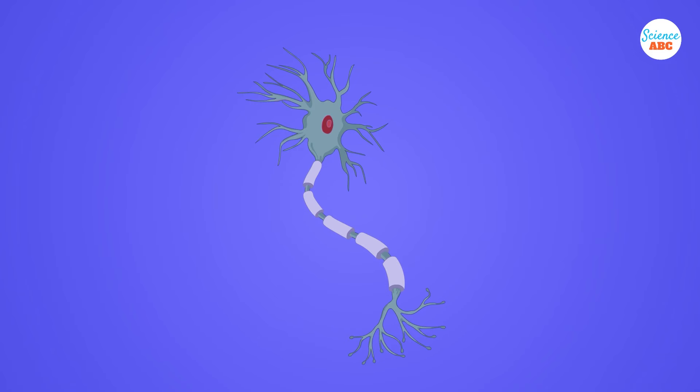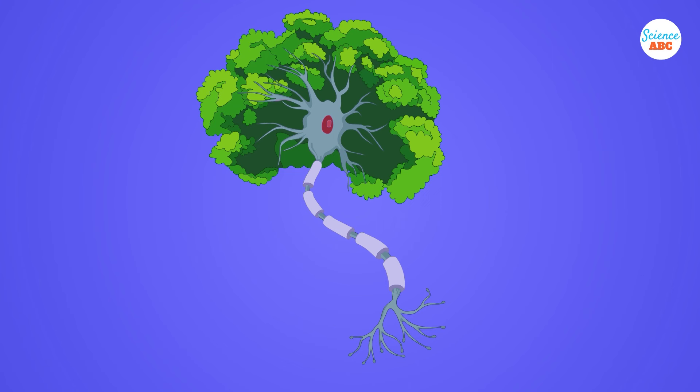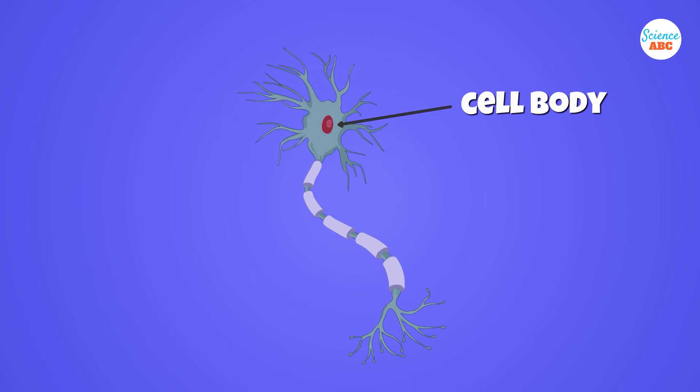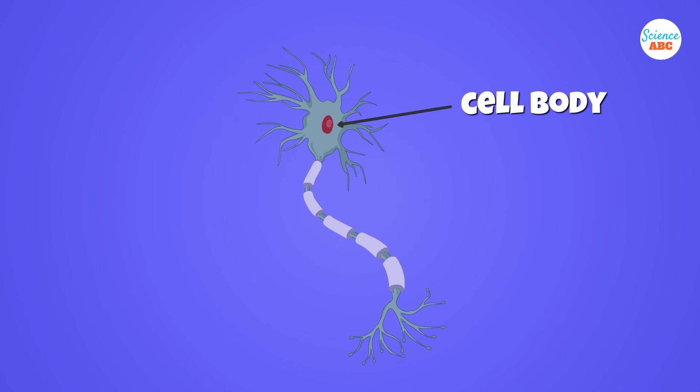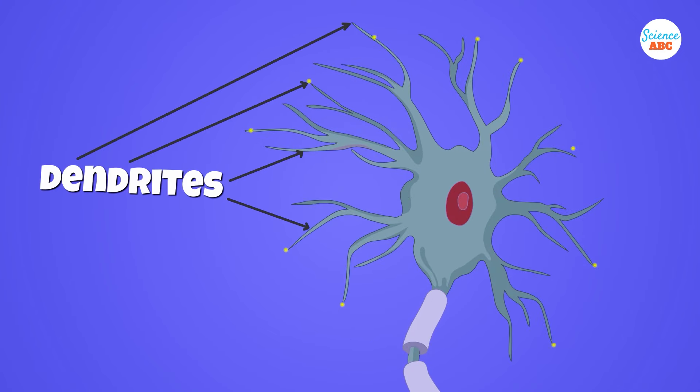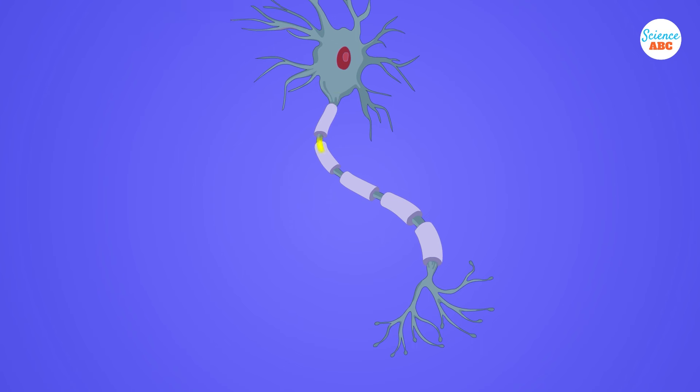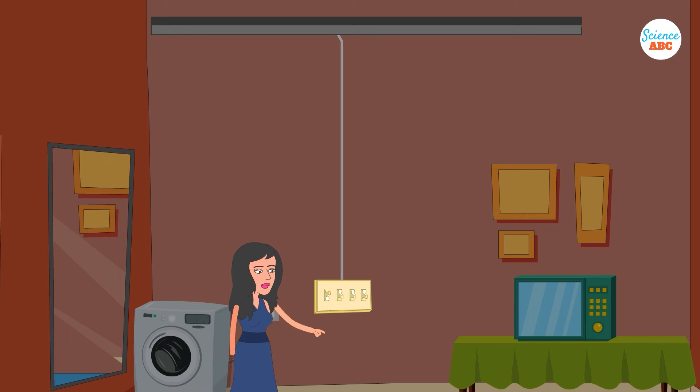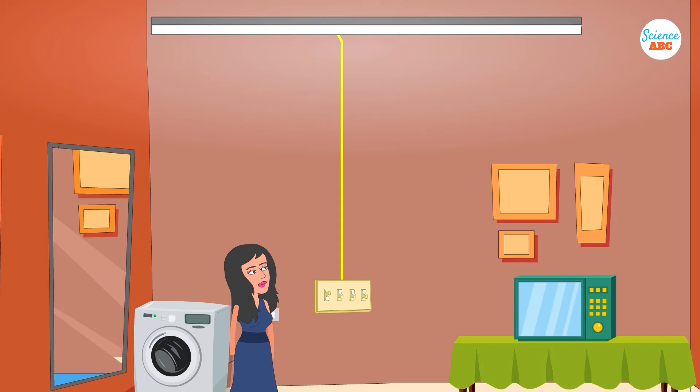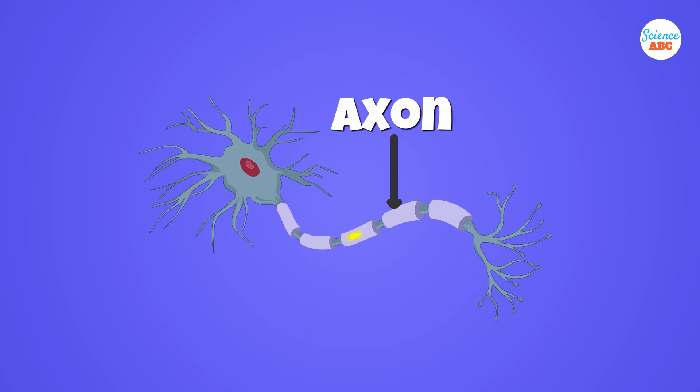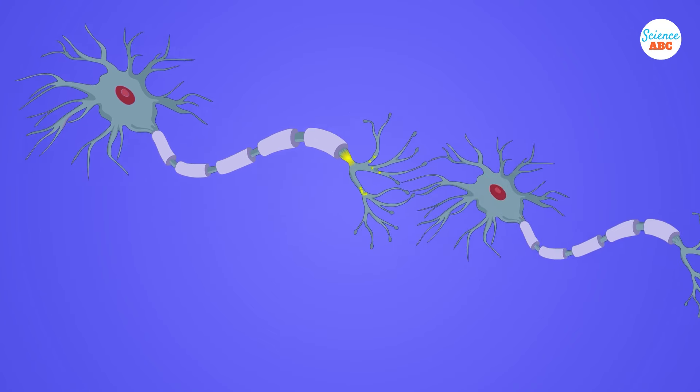But briefly, the neurons look a little like trees. They have a head region called the cell body, along with several branches. The smaller branches, called dendrites, receive signals that are combined, and that total signal is then transmitted through the longest branch, the axon. Similar to how a wire carries electricity from a switch to an electric bulb, the axon carries the nerve impulse from a cell body to the next cell.